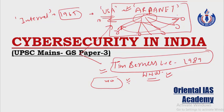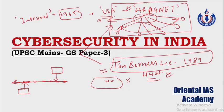The World Wide Web made this internet network accessible to the entire world. The origin of the problem lies here: when the USA designed ARPANET, the information exchange was happening between trustworthy parties, so the possibility of data breach was low. But the World Wide Web provided a common platform to everyone. Now anyone could enter, and anyone could be a potential threat. Today, with more than 4 billion users on the internet, any one of them could be a threat to the entire internet system.